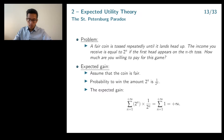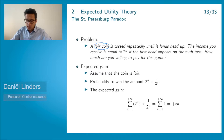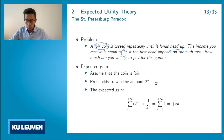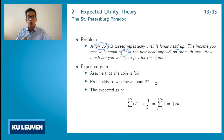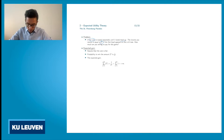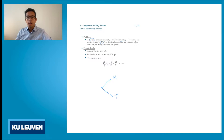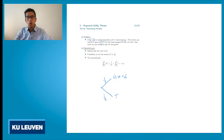Consider the following game. You have a fair coin that is tossed repeatedly until it lands head up. The income you receive when you play this game is equal to 2 to the power n, if you have to toss n times until you get head up for the first time. The question we want to solve is how much are you willing to pay to play this game. We toss the coin for the first time and there are two possible outcomes: head or tail, each occurring with probability 1/2. If you toss head for the first time, the income you receive is 2 to the power 1.